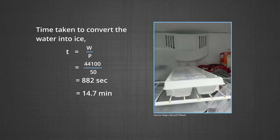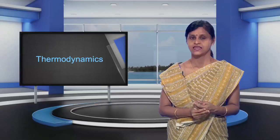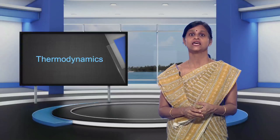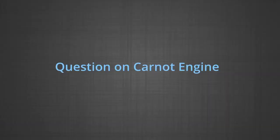The time taken to convert water into ice = work / power = 44100 / 50 = 882 seconds, which equals 14.7 minutes. So the ice will be ready well before the guests arrive for the birthday party.